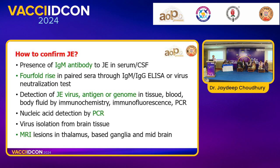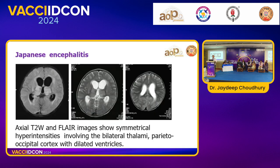The most confirmatory test for JE is IgM positivity in CSF or a fourfold rise in serum. Brain MRI is not mandatory for JE but when done shows classical lesions in the thalamus, basal ganglia, and midbrain. This overview covered common vector-borne infections with atypical and varied presentations. Most of the time we are comfortable managing malaria, scrub typhus, and dengue, but atypical cases require vigilance — sometimes MRI findings precede confirmatory CSF IgM results.